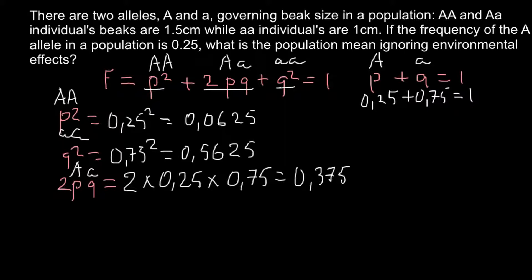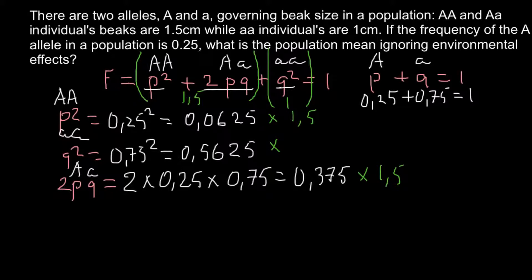Now we can find the population mean. We multiply each genotype frequency by the corresponding beak size. The homozygous dominant and heterozygous genotypes both have a beak size of 1.5 cm, while the homozygous recessive has a beak size of 1 cm. So we multiply the homozygous dominant frequency by 1.5 cm, the heterozygous frequency by 1.5, and the homozygous recessive frequency by 1 — giving us 0.5625.